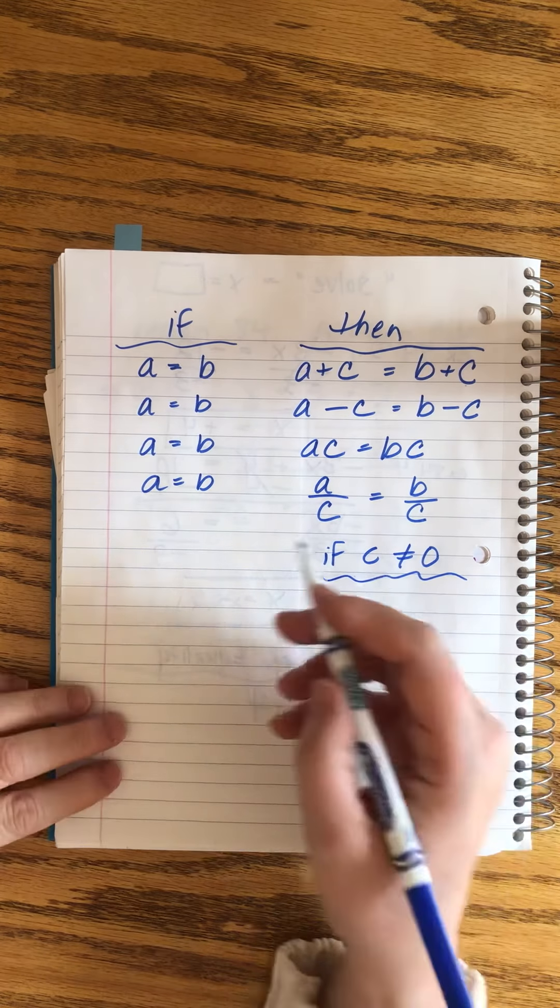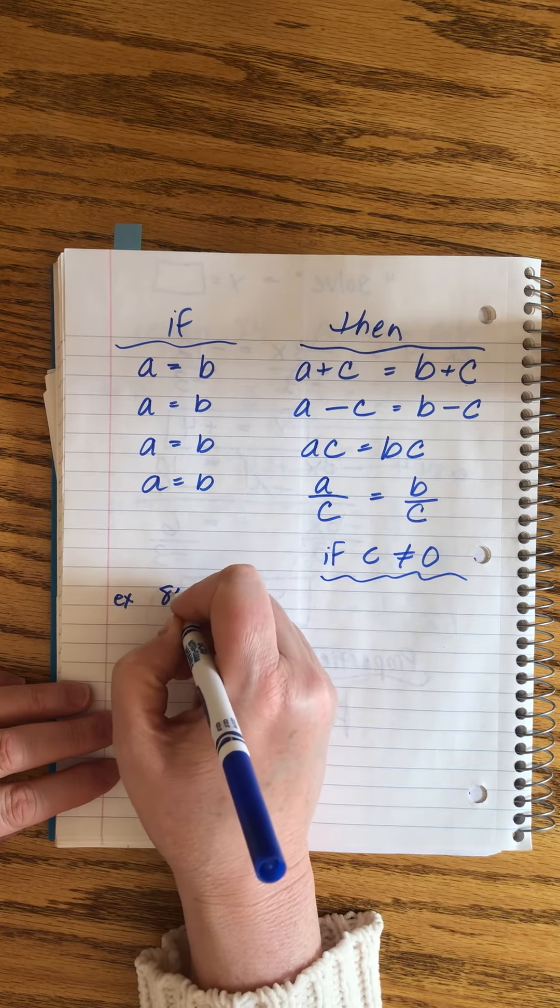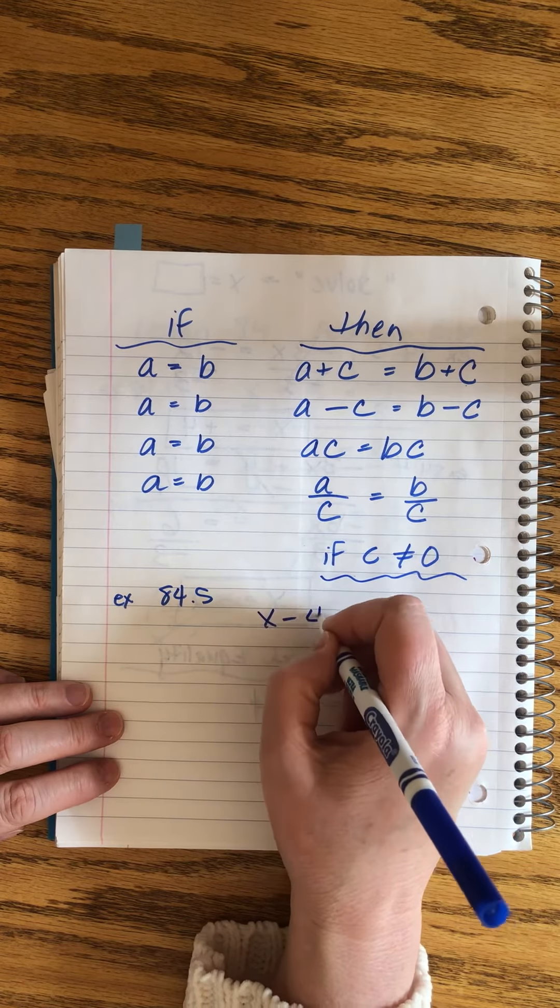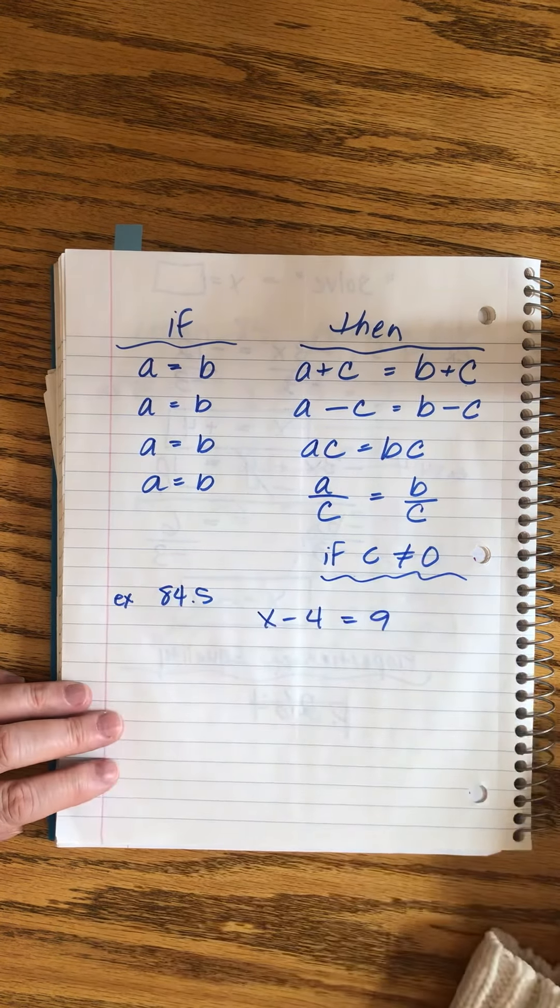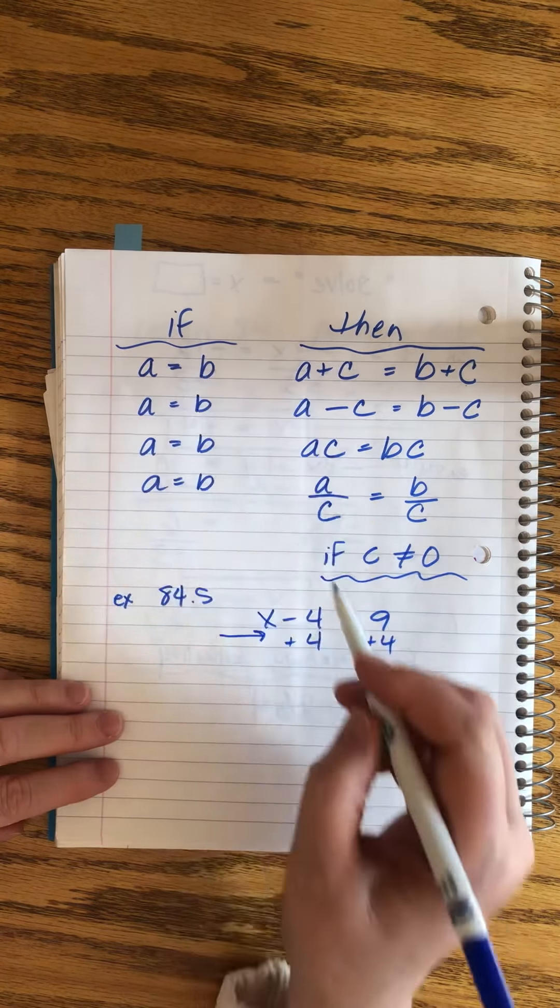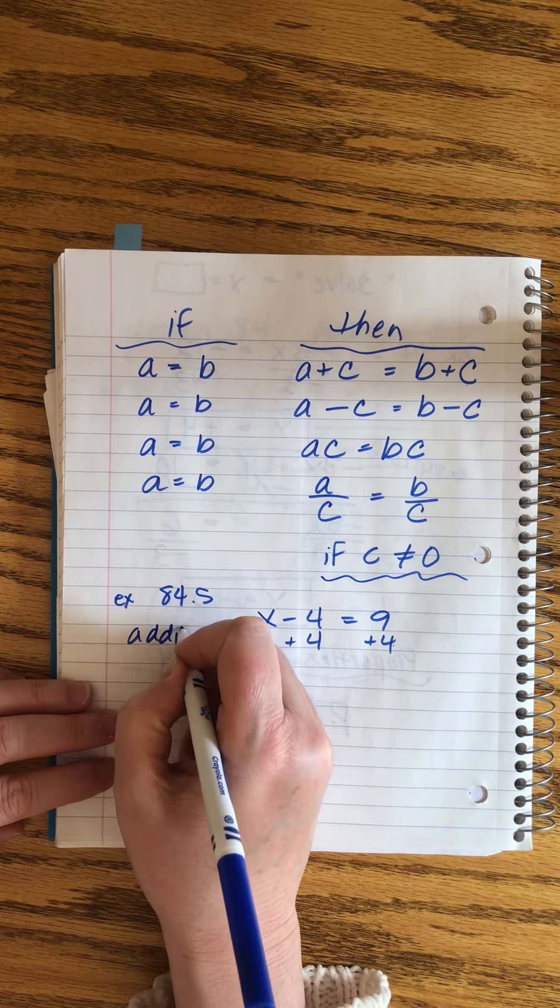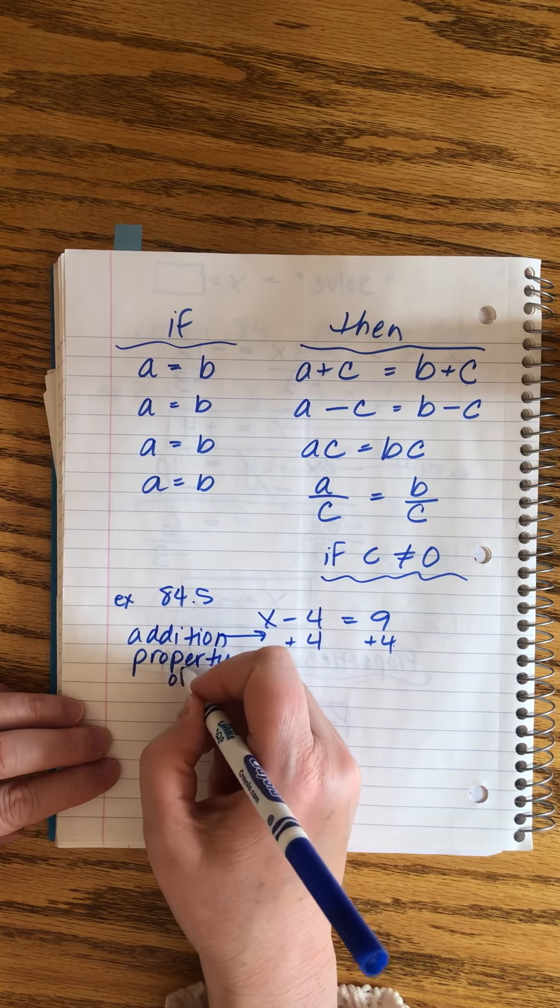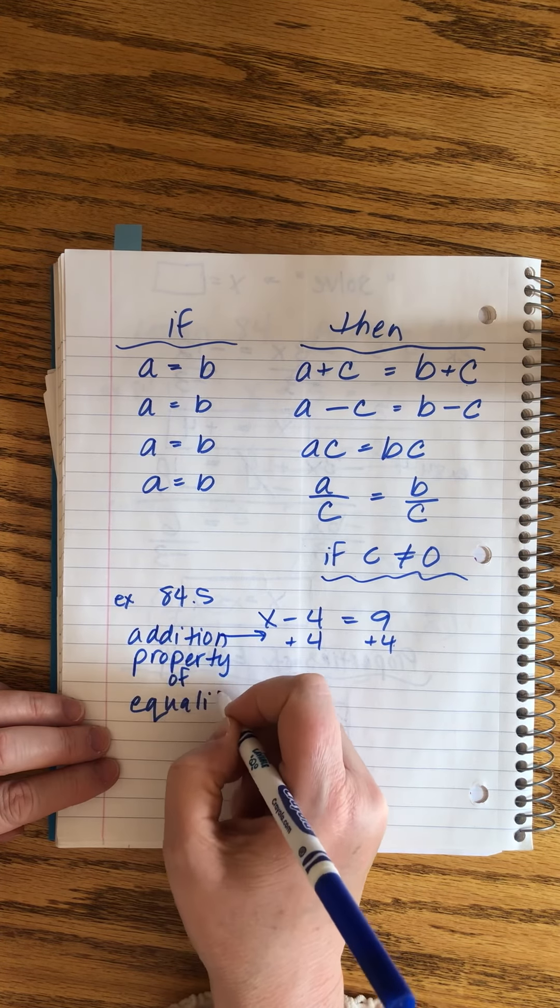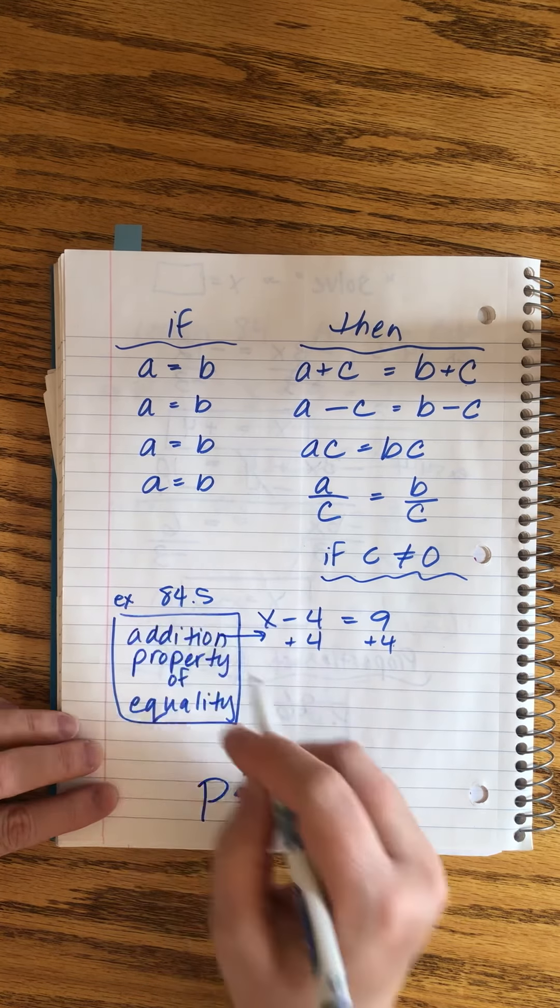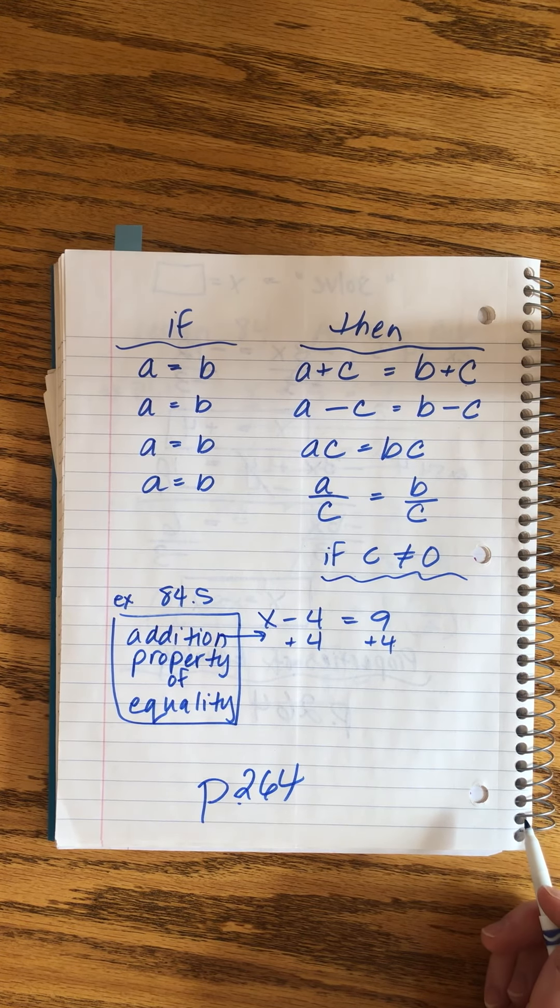And we use these in algebra all the time. There's a question that says, which property of equality do we use in solving x minus 4 equals 9? Well, how do we solve that? We want to add 4 to both sides, right? So that's their thing. Which one of these four rules makes it okay for us to do that? Well, we're adding so it's the addition property. That's all they want to hear. Addition property of equality. All these fancy words are in your book on page 264. So just look at that chart as you're doing any problems like that, and it'll be easy.